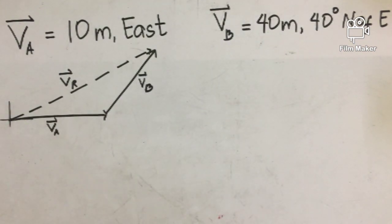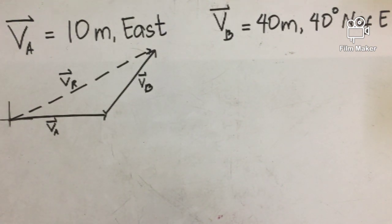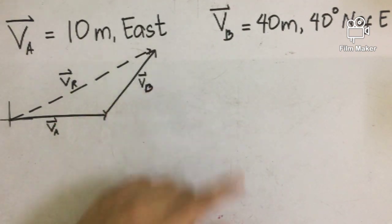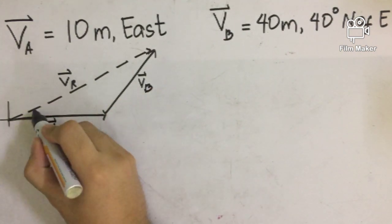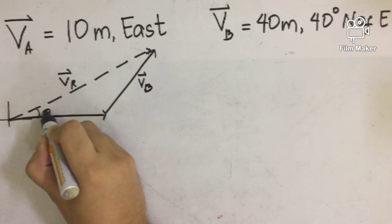To determine the resultant of this vector graphically, we can use the tip-to-tail method. From the origin, we draw the tail of the resultant vector and connect it to the tip of the second vector. That's why our resultant vector here is diagonal, and there is a certain angle theta that we are to find out later on.